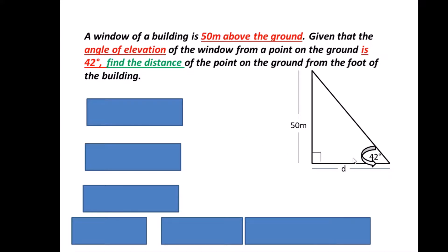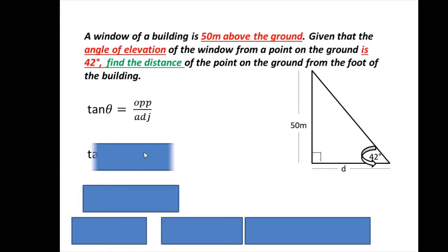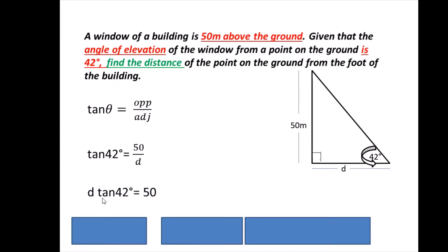We are given the opposite side and need to find the adjacent side, so we use tan theta equals opposite over adjacent. Therefore, tan 42 equals 50 over d. To find d, we rearrange: d multiplied by tan 42 equals 50. Dividing both sides by tan 42 gives d equals 50 over tan 42.